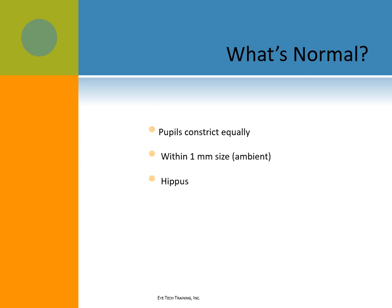Normal for pupils is that they constrict equally. They are within a millimeter in size of one another in ambient light, and hippus is normal. Hippus is a bilateral symmetrical unrest in the size of the pupils under steady illumination. It's a normal reflex which diminishes as we age, so it's more prominent in younger people.